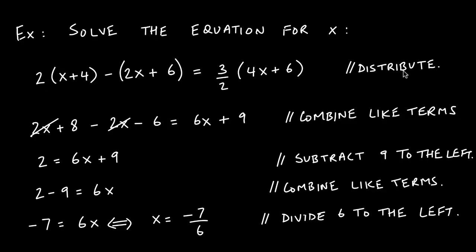If we distribute the 2 into (x + 4), 2 times x gives us 2x and 2 times 4 gives us 8. Then we distribute the negative: negative times 2x is negative 2x, and negative times 6 is negative 6. Here when we distribute 3/2 into (4x), the 2 and the 4 can be reduced.